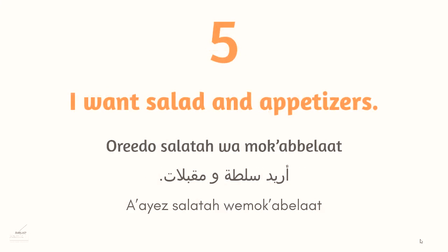Phrase five: أريد صالة و مقبلات — 'I want salad and appetizers.' أريد is I want, صالة is salad, and مقبلات is appetizers — a broken plural. In Egyptian Arabic we say عايز or عاوز instead of أريد, so: عايز صالة و مقبلات.